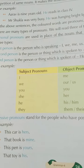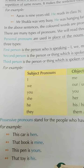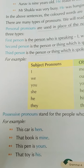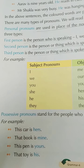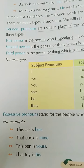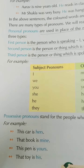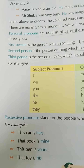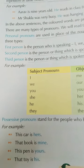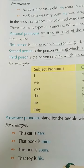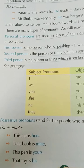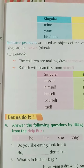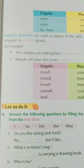Possessive pronouns tell about the ownership of something. For example: this car is hers, that book is mine, this pen is yours, that toy is his. So the possessive pronoun tells you about the ownership of the thing. Like 'this book is yours' — it tells you the possession, the ownership of the book.